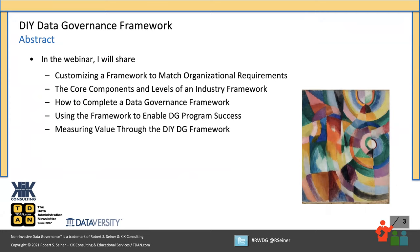Now I want to talk about what we're going to address today. The things I want to cover are: customizing a framework to match things required by your organization. You can't always take a general framework and have it fit your specific requirements. The framework is made up of six core components of a successful data governance program, and I'll talk about the different levels of the organization that need to offer their perspective when it comes to each of those components. We'll spend a little time talking about how to complete the framework, and I hope if you have it sketched out in front of you, you'll be able to fill it in as we walk through the webinar.